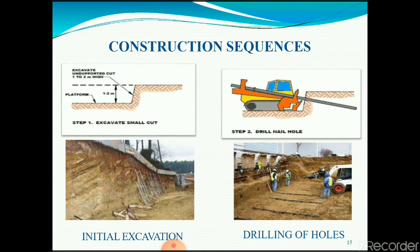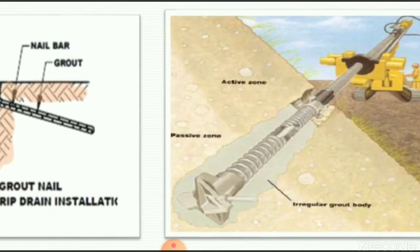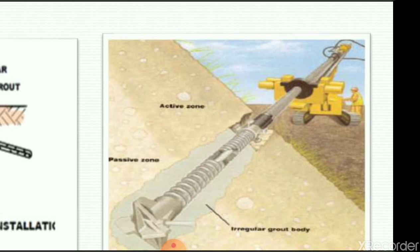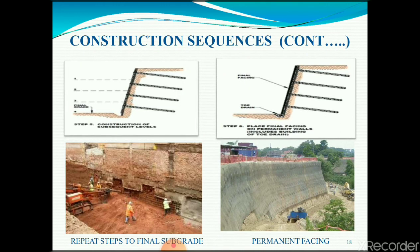The construction sequence shown pictorially: first, excavate an unsupported cut up to one to two meters high. Second, drill nail holes. Third, introduce grout and nail bar. The 3D view shows an active zone and passive zone — this is a passive technique. Grout is injected into the soil using drilling equipment. Then place reinforcement and drainage on the surface, followed by shotcrete and installing bearing plates. Repeat steps to the final subgrade and add the permanent facing.